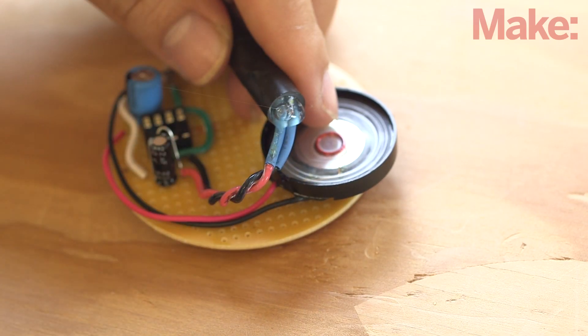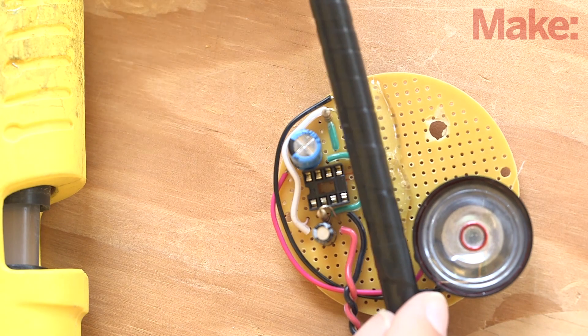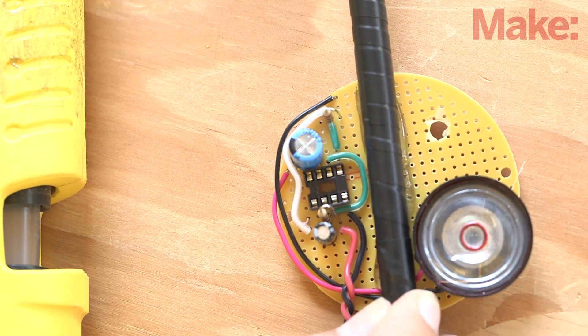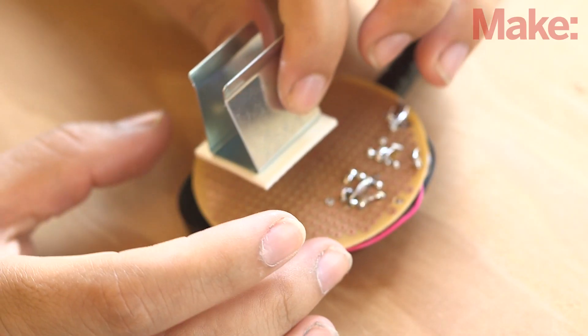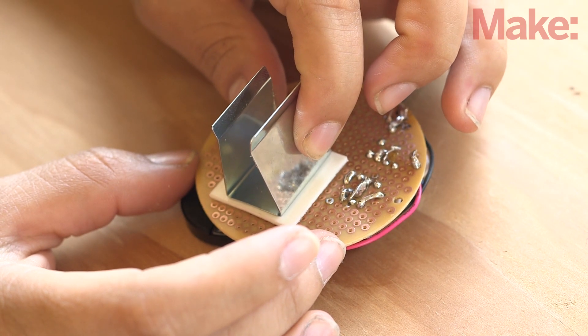Hot glue the LDR into the light tube and connect the wires to the breadboard. Use hot glue to attach the light tube, and then secure the 9-volt battery holder to the underside of the board with a piece of double-sided foam tape.